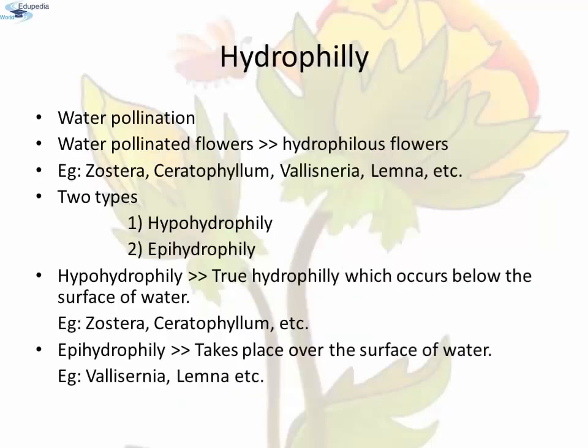Hydrophily: In some aquatic plants, pollination may be brought about through the medium of water. Pollination by the agency of water is called hydrophily or water pollination. The water-pollinated flowers are called hydrophilous flowers. For example, Zostera and Ceratophyllum, etc. Hydrophily is of two types: hypohydrophily and epihydrophily.